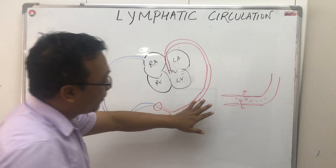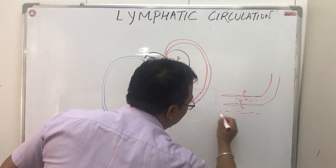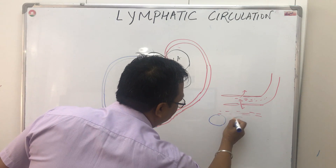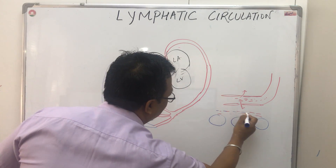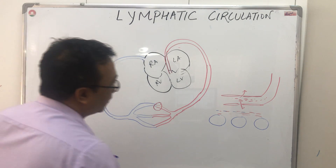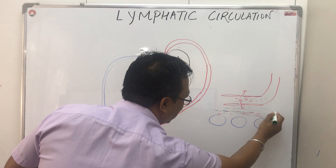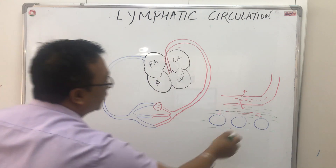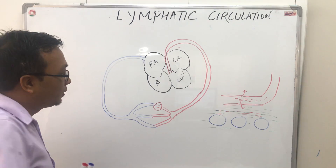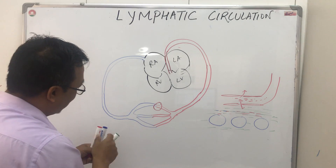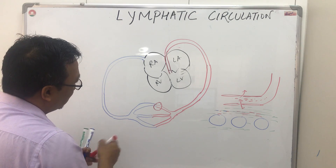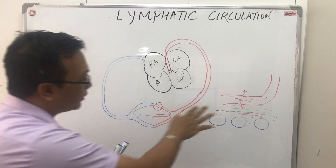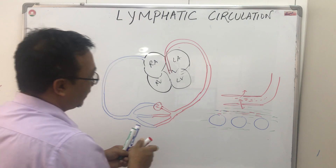Because of the high pressure, there is plenty of plasma collected in the interstitial space. There is leakage of fluid — there is leakage of fluid and there is collection of plasma around the cells because of the pores in between the capillary endothelium.